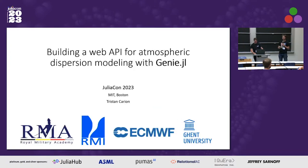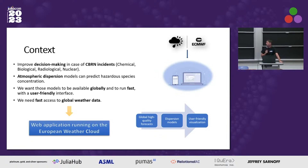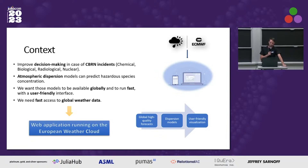We'll talk about modeling with Genie.jl. Since CBRN and CREX imply the release into the atmosphere of hazardous materials, atmospheric dispersion models can be helpful to predict the impacted area before such a release.